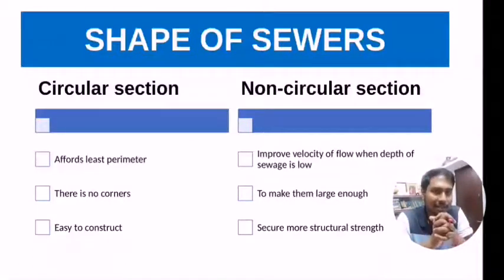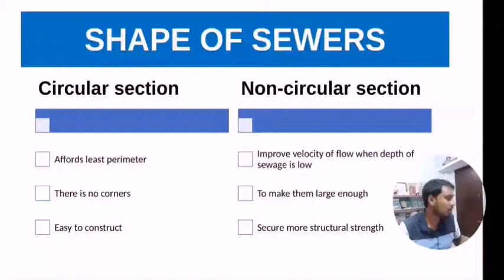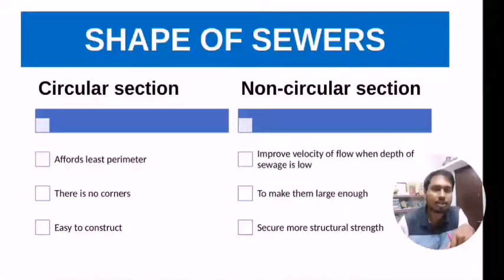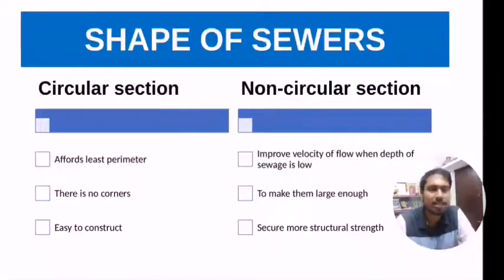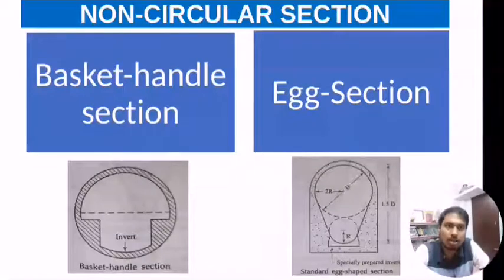In some cases we go for non-circular sections. The reasons include: to improve the velocity of flow, to make the sewer large enough for a man to enter for cleaning, and to secure more structural strength. Non-circular sections may come in different sizes and shapes.